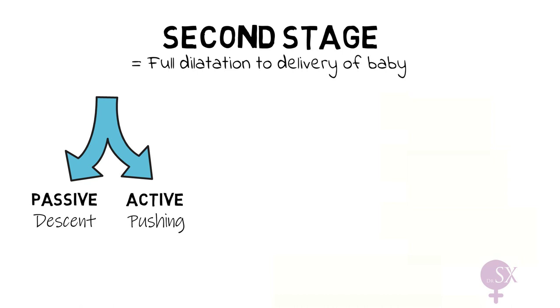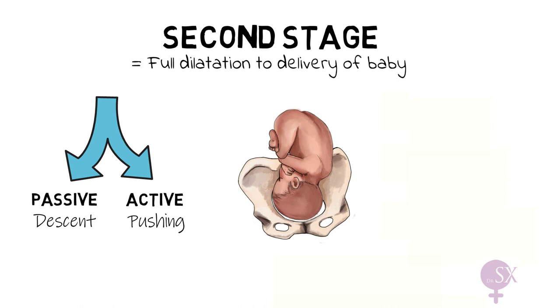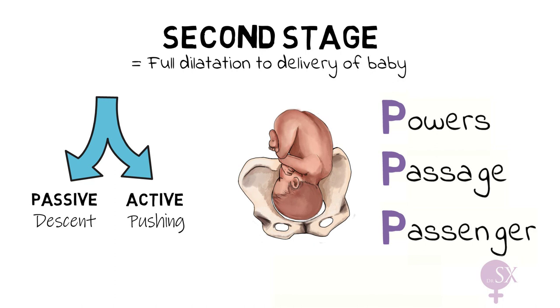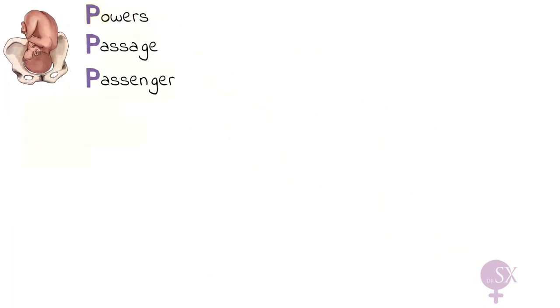The second stage is essentially the process by which the baby must navigate through the maternal pelvis. We have three factors which determine the progress, which we call the three P's: the powers, the passage, and the passenger. The powers simply refer to the strength of the uterine contractions — we should have around four to five strong contractions in 10 minutes.